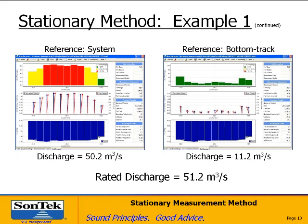One thing to add: when you look at the velocity profile across the cross-section, you can see the magnitude of the moving bed just by making a comparison between the two references. You can also get a good idea of the distribution of the effects of the moving bed — in this case, much faster moving bed velocities in the center of the channel than on the sides.